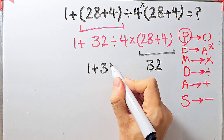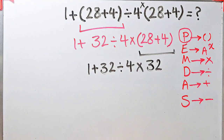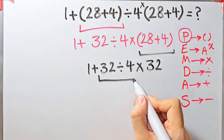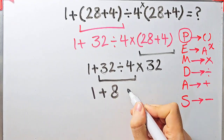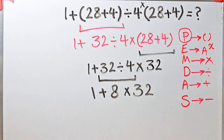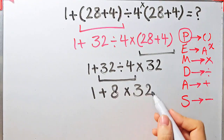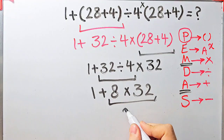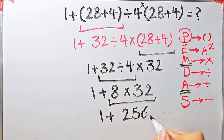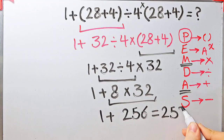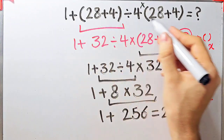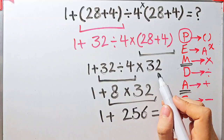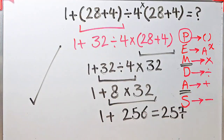Now the question is 1 plus 32 divided by 4, then times 32. We have addition, division, and multiplication. First we simplify the division: 32 divided by 4 equals 8. Now we have 1 plus 8 times 32. Multiplication has higher priority than addition, so 8 times 32 equals 256. Now we have 1 plus 256, which equals 257. The final answer equals 257. If you don't pay attention to the PEMDAS rule you get the wrong answer. Thanks for watching — subscribe to the channel for more math videos.